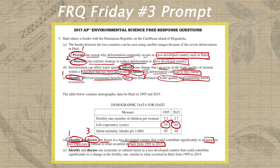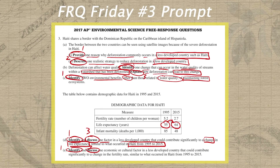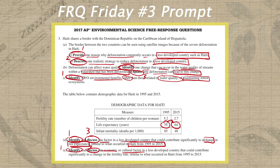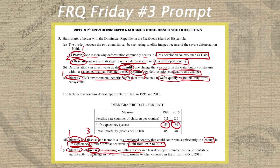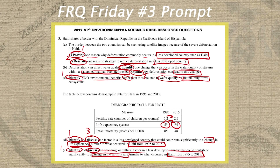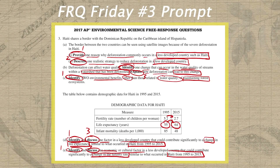In part E, we again have an identify-and-discuss prompt, so I circle 'identify' and write a one, and circle 'discuss' and write a three. In this case, we need an economic or cultural factor in a less developed country that could contribute to a change in fertility rate similar to what occurred in Haiti from 1995 to 2015. It's almost the mirror of the question above, but now we're looking specifically at a change in fertility rate. We find fertility rate on the graph, look at the change from 1995 to 2015, and make sure our economic or cultural factor accounts for that change and that we explain how it does so.